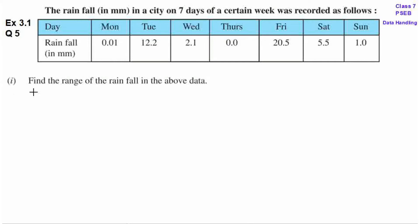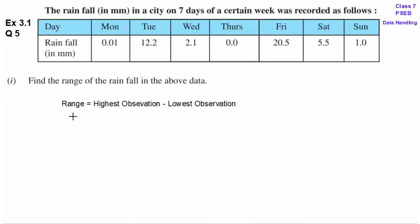First question is: find the range of the rainfall in the above data. So, हमने range निकालनी है rainfall की. Range हम कैसे निकालते हैं? Range is equal to highest observation minus lowest observation.